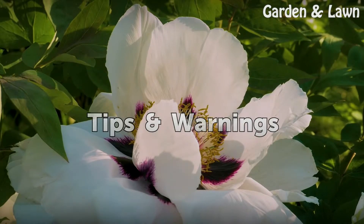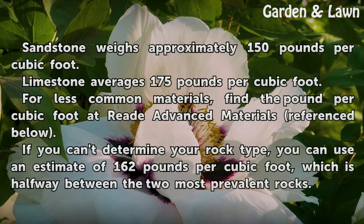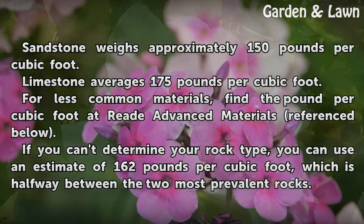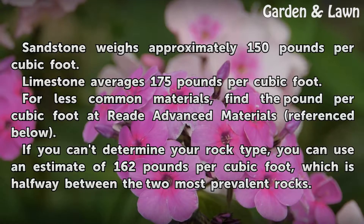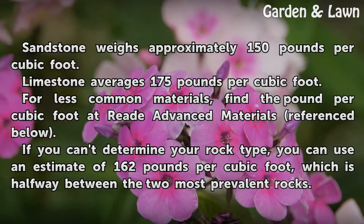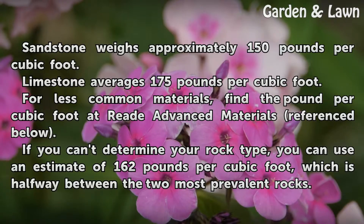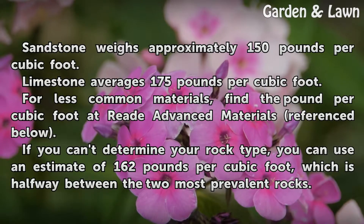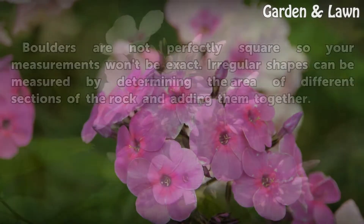Tips: Sandstone weighs approximately 150 pounds per cubic foot. Limestone averages 175 pounds per cubic foot. For less common materials, find a pound-per-cubic-foot value in an Advanced Materials Reference. If you can't determine your rock type, you can use an estimate of 162 pounds per cubic foot, which is halfway between the two most prevalent rocks.